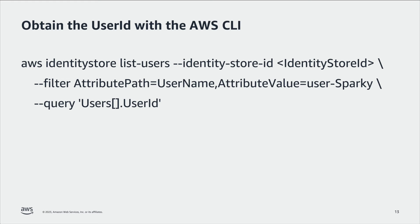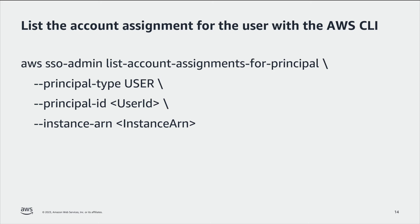We first filter for the username UserSparky out of the list of all users in the identity store, then query the username attribute UserID. And finally, we get all account assignments for a specified user principal using UserSparky's UserID as the principal ID and the instance ARN from a previous command. If we wanted to investigate a group instead of a user, then we would follow a similar process to obtain the group ID and use it as the principal ID, and substitute the principal type for a group.